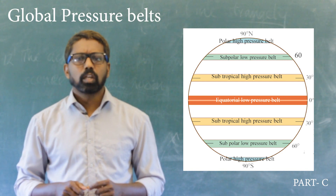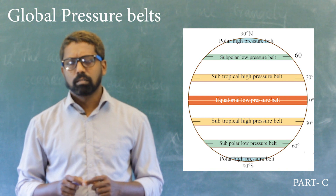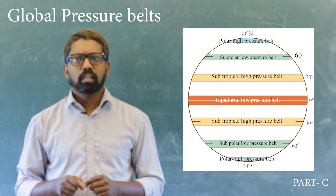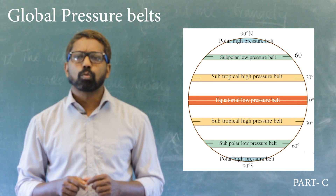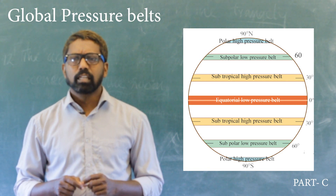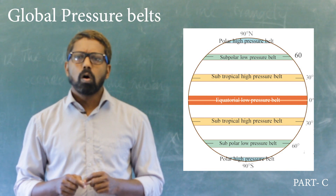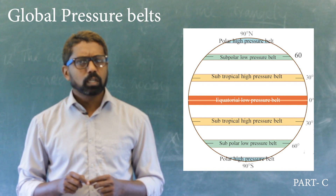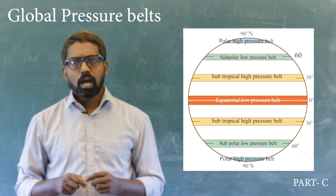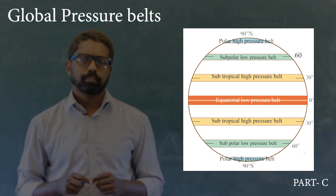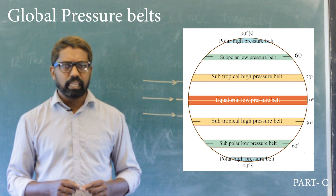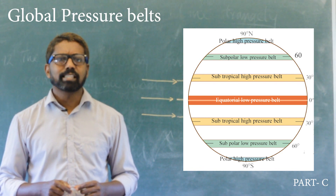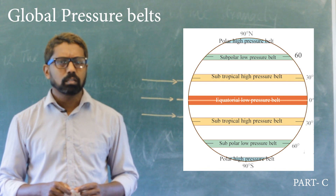First, the 0 degree equatorial low-pressure belt. This is the zone where the sun's rays fall vertically throughout the year. Hence the temperature will be high in this zone all through the year. The air expands due to sun's heat and rises up on a massive scale.